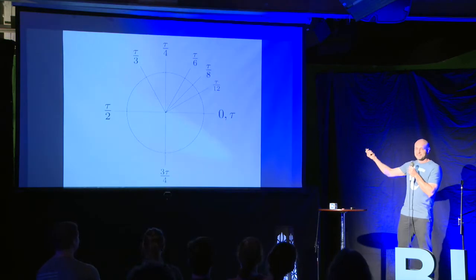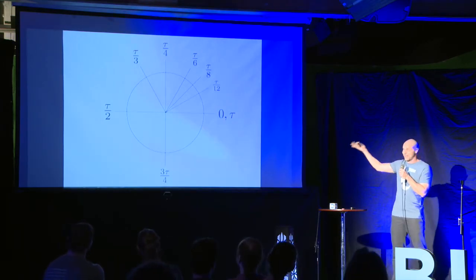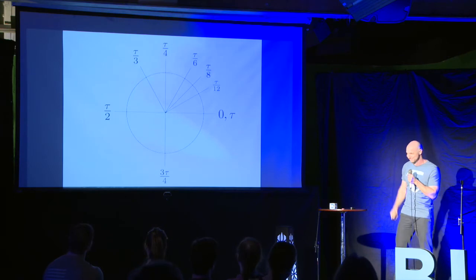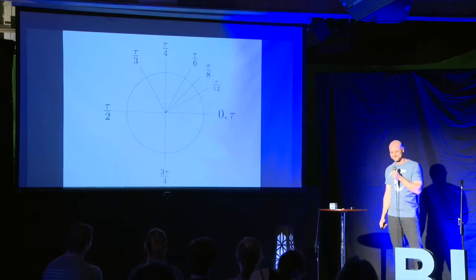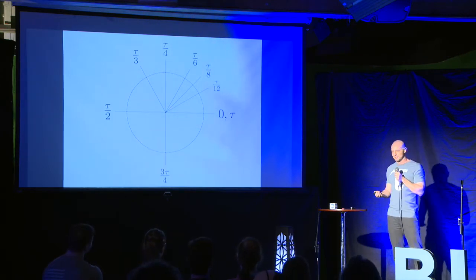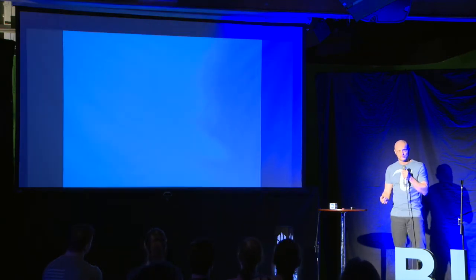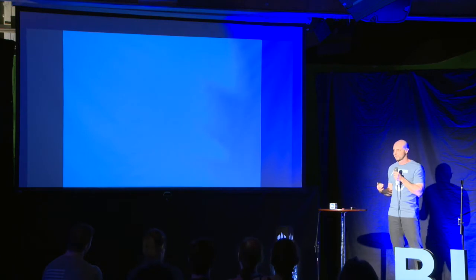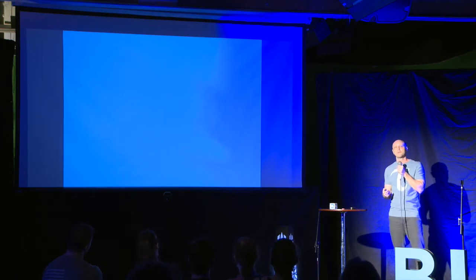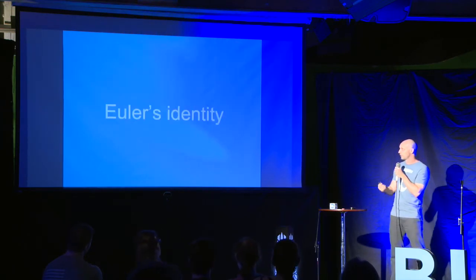So this is basically a one-diagram proof to me that tau is right and pi is wrong. There are some other arguments though — especially mathematically sophisticated people will say, what about Euler's identity? So let's talk about Euler's identity.